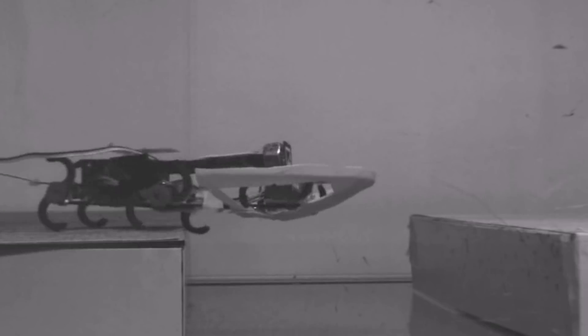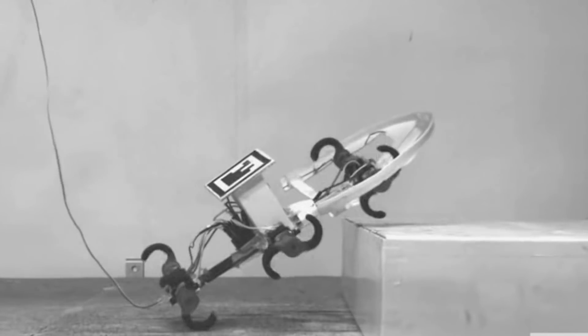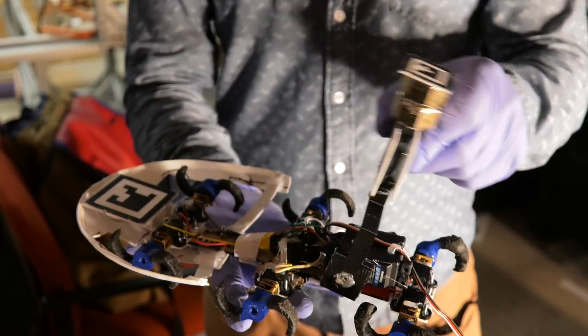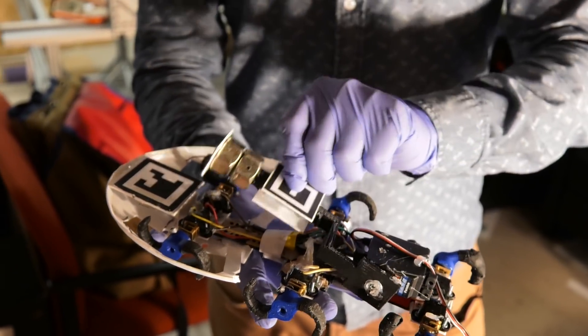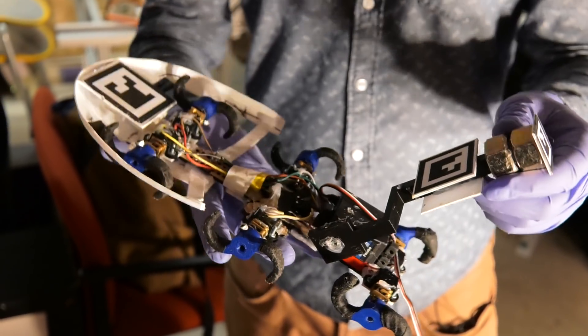We ran it towards the same obstacles that the cockroach crossed, and what we found was this pitching the body upwards was pretty important. So we added an active tail to the robot so that the tail swings back, the robot also pitches up.